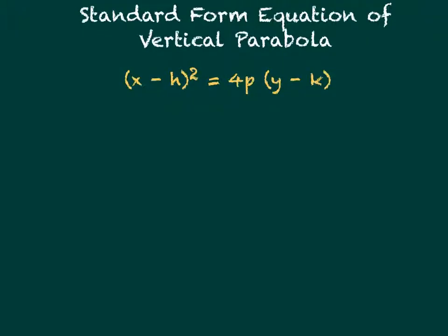There are two standard form equations of parabolas. The first one is the vertical parabola, which is more familiar because x is the squared term. The standard form equation is (x-h)² = 4p(y-k). In this instance, p can never equal zero.